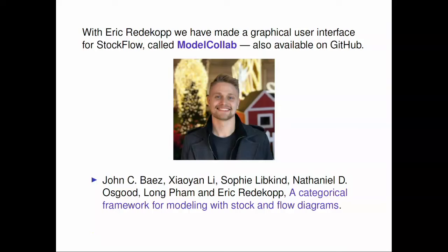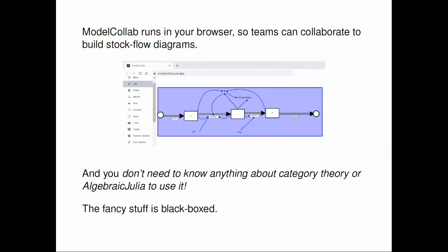The next stage was that Nate Osgood and his student Eric Redekop made a graphical user interface for StockFlow called Model Collab, also available on GitHub. We wrote a paper about it explaining it in language suitable for people who don't know category theory. The software can run in a web browser, and the same instance can run in multiple web browsers simultaneously. Two people could be building a stock flow diagram in remote locations, or you could build one and save it, and then someone else could open it up and compose it into a bigger one.